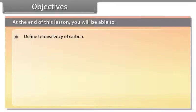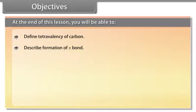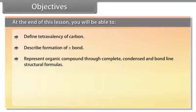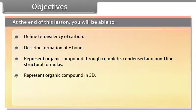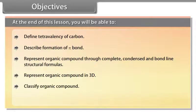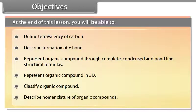Objectives. At the end of this lesson, you will be able to: define tetravalency of carbon; describe formation of pi bond; represent organic compounds through complete, condensed, and bond-line structural formulas; represent organic compounds in 3D; classify organic compounds; describe nomenclature of organic compounds.